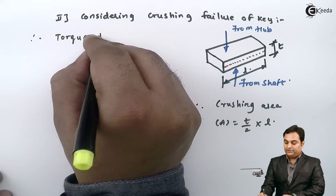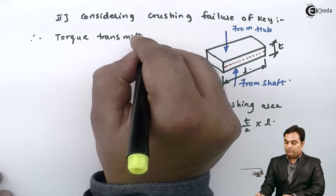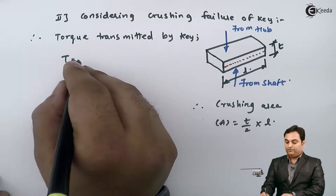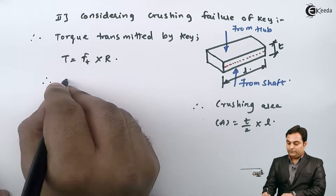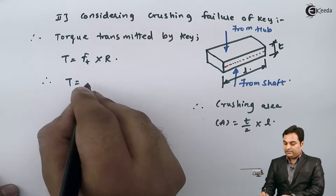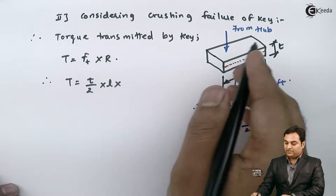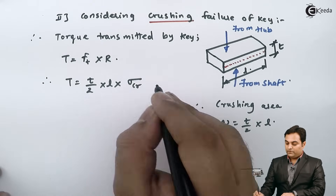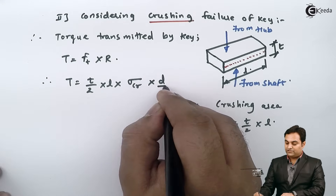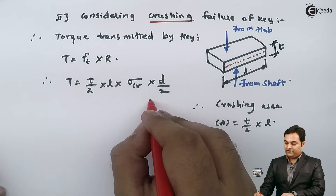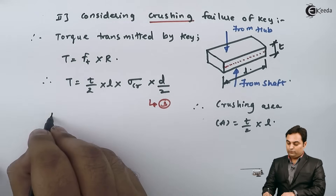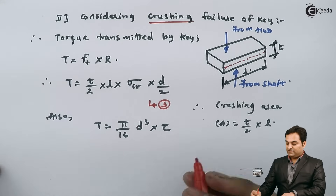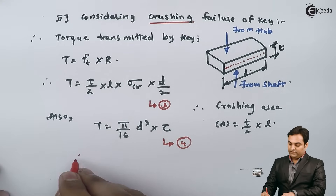The torque transmitted by the key considering crushing is T = (T/2) × L × sigma_cr × (d/2). This is Equation 3. The torque transmitted by the shaft is T = (π/16) × d³ × tau. This is Equation 4.